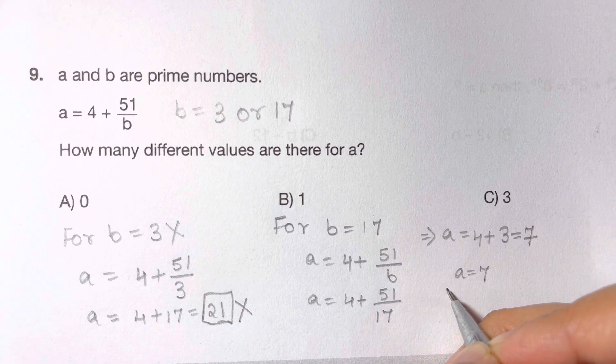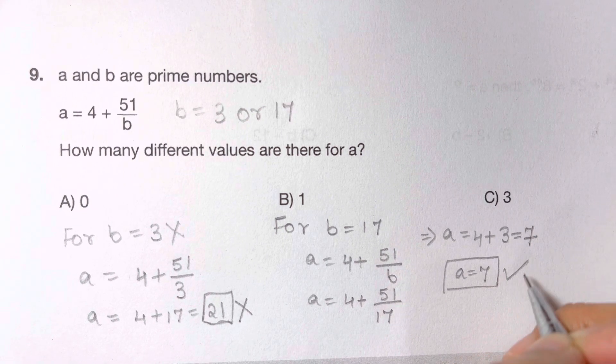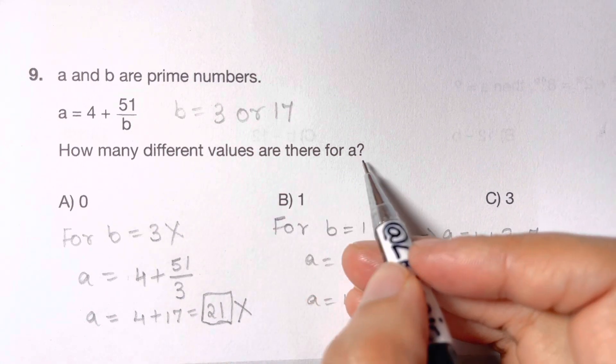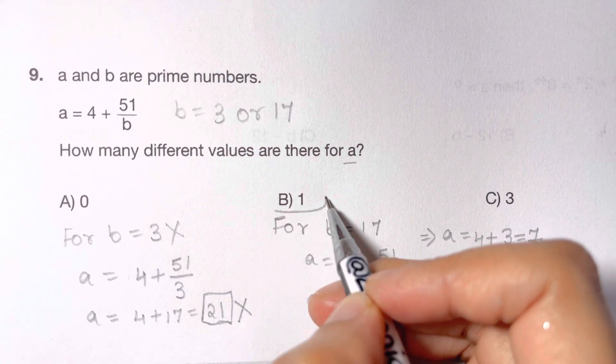So 7 is a prime number, and that's right. So you have how many solutions for A? That's only one.